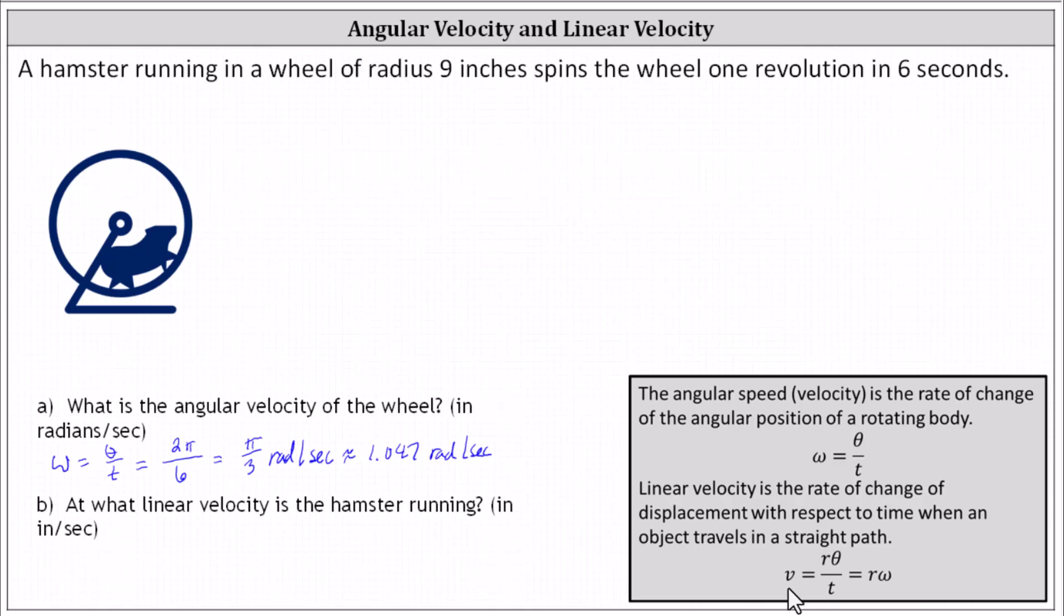The linear velocity v is equal to the radius r times theta divided by t, which can also be expressed as r times omega, because omega, the angular velocity, is equal to theta divided by t.